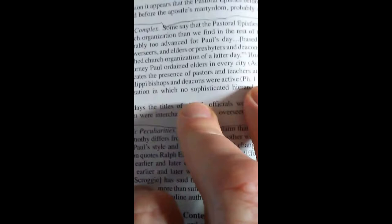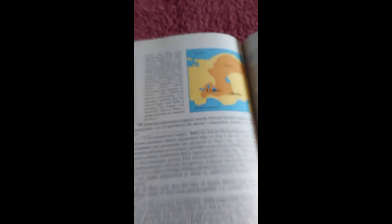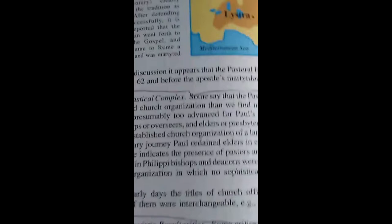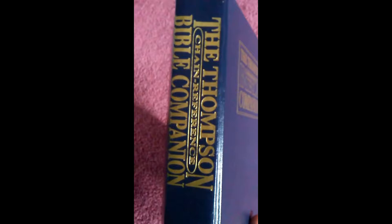In these early days, the titles of church officials were not clearly defined. Some of them were interchangeable, e.g. overseer for elder. So, it was a very simple organization in which no sophisticated hierarchy was involved. It's talking about the primitive church. There was nothing like you see today. It was just believers who got together and rejoiced in the Lord. And the same thing happens today amongst true believers. And it occurs because the Spirit wants it to occur. So, that's the Thompson Chain Reference Bible Companion.